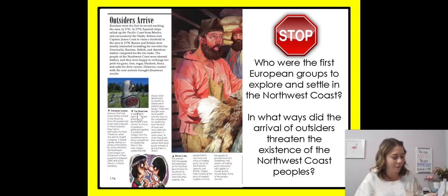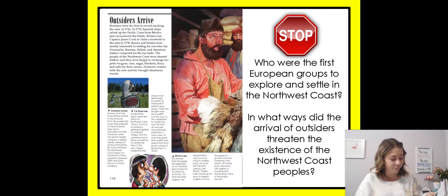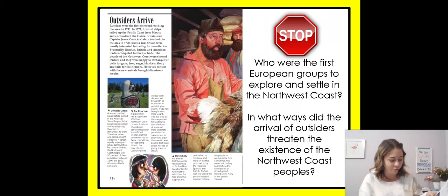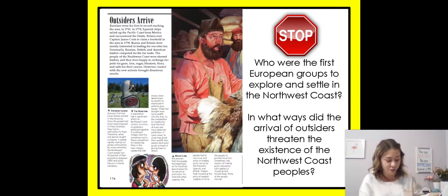The reduction in population had a significant effect on Northwest Coast culture. Survivors of epidemics gathered together in combined villages, but this sometimes led to fierce competition for leadership titles in the new villages. Leadership had always been determined by wealth as expressed in potlatch giveaways. Trade had brought even more wealth into the area, so competition for leadership took the form of more and more elaborate potlatches. In some cases, to show how great their wealth was, people destroyed goods instead of giving them to others. Before long, the animals that the people had depended on for food had been hunted for fur almost to extinction. For food and other supplies, the people had to rely more and more on trading posts set up by the Russians, Spanish, and British. Traders kept increasing the price of needed supplies to force the people to provide more furs. Sometimes the owners of the trading post refused to sell supplies or closed up and moved away. Many of the people starved.